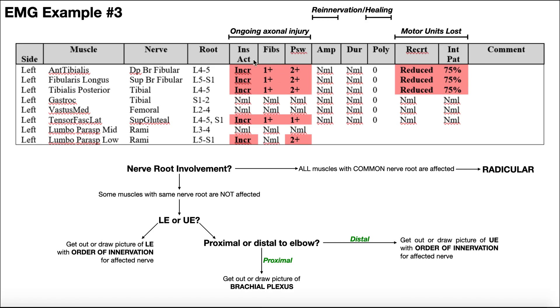We're going to look at all the involved muscles, which — nice thing here is that they're all actually bolded in red. And we want to see if there is a common nerve root that's affected in all of these.